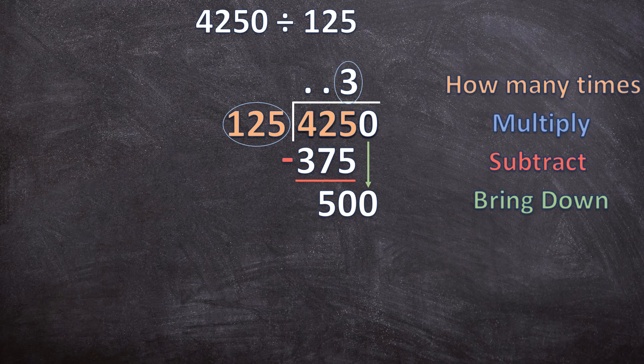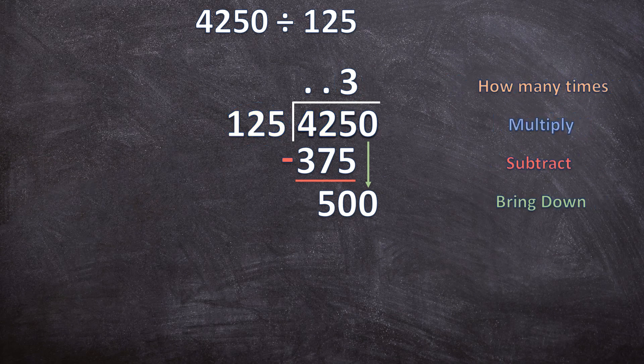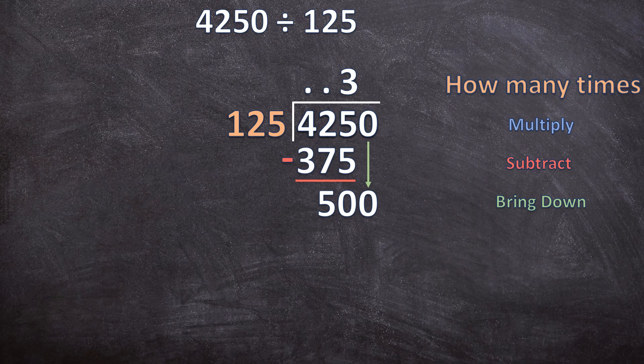And now we start with our steps over again. So the first step: how many times does 125 now go into 500? And 125 can go into 500. How many times? Four times.